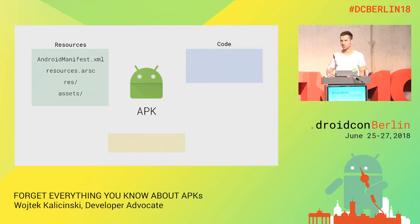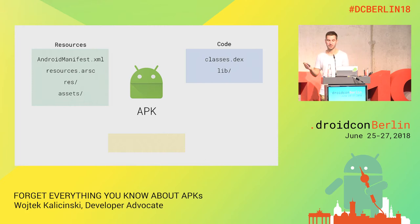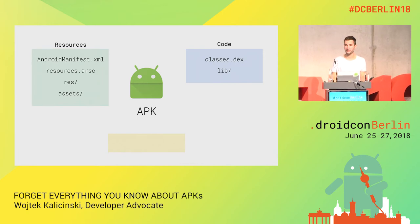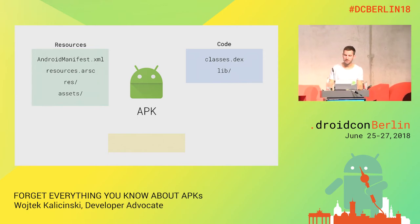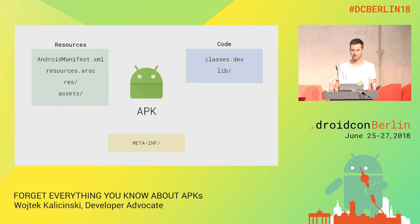There's also assets where you can put any file. Then we have code — there are two types of code in Android apps. There's Dex code, which is the Java or Kotlin code you write that gets compiled into Dex files; there can be one or more if you reach the Dex limit. And there's the lib folder, which holds native libraries — .so's and .dll's — which can also be pretty big. And there's some metadata I'll discuss later in the meta-inf folder.